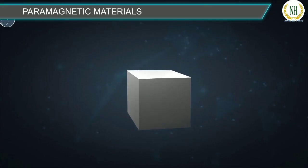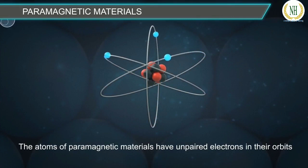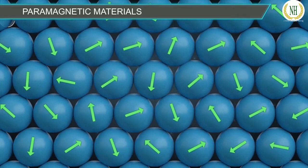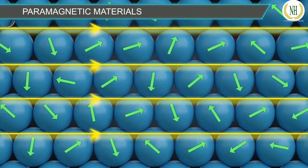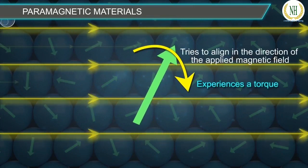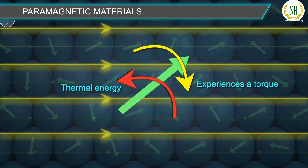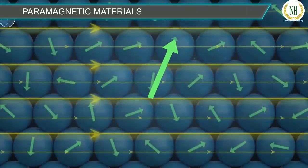The atoms of paramagnetic materials have unpaired electrons in their orbits, due to which they have a permanent dipole moment. In the absence of an external magnetic field, the magnetic moments of atoms are randomly oriented and the net dipole moment is zero. When an external magnetic field is applied, the magnetic dipole experiences a torque and tries to align in the direction of the applied magnetic field. At the same time, the thermal energy of the material opposes this alignment and tries to keep the dipoles in random orientation.